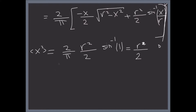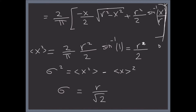Now let's find sigma. We know sigma equals the square root of ⟨x²⟩ minus ⟨x⟩². Plugging in the numbers and taking the square root, we get sigma equals r divided by the square root of 2. As you can see, this example is getting harder and harder — just remember that all of this is about probabilities, averaging, and taking expectation values of certain quantities.